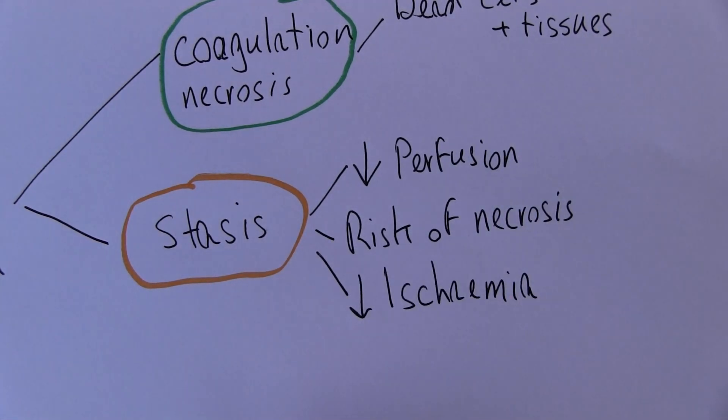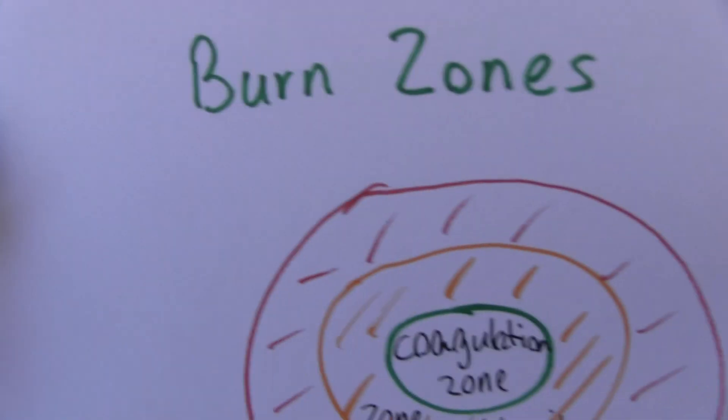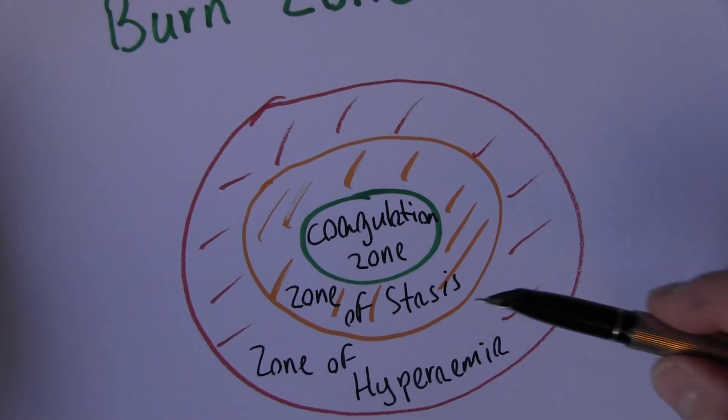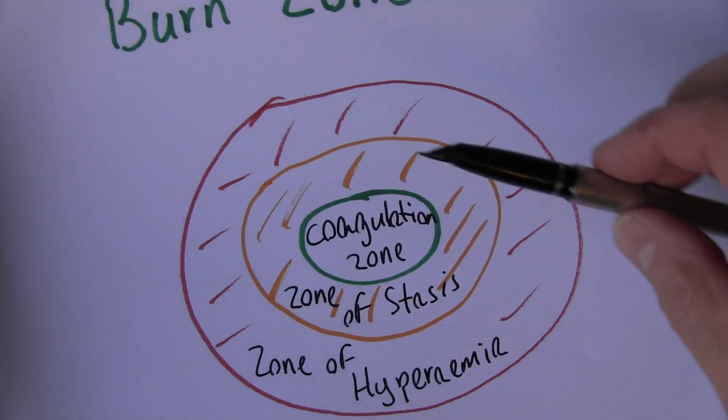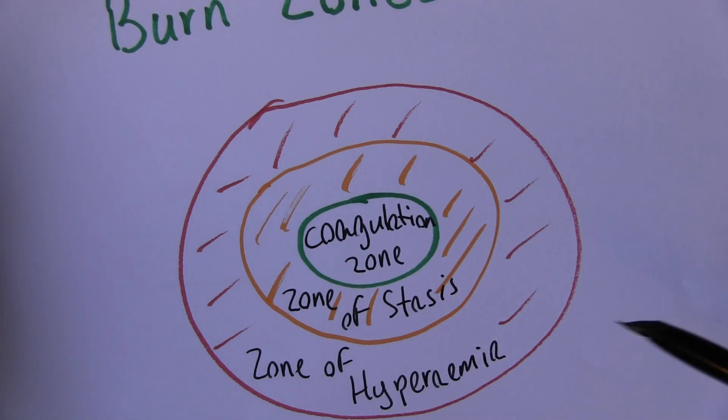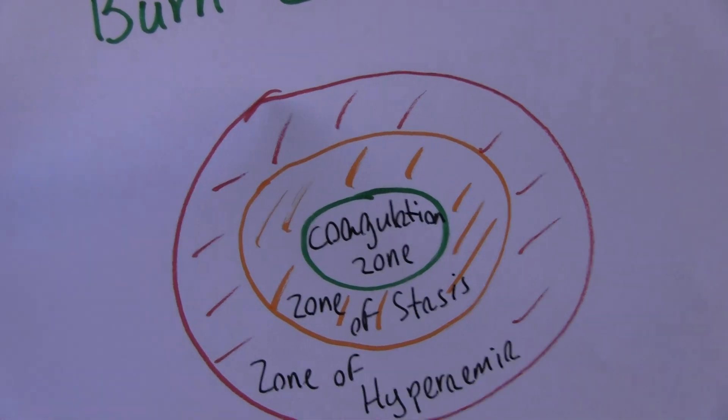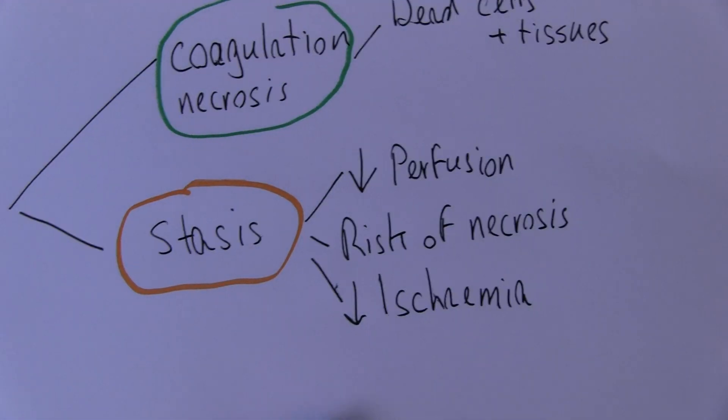And this makes a huge difference because it means that the final burn, if we lose this area, will be that size, whereas if this area can be salvaged we're only going to get a burn of that size. Only the coagulation zone itself will be the final area of burn injury.